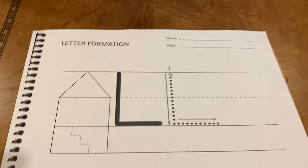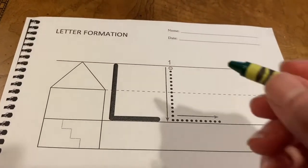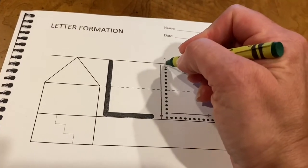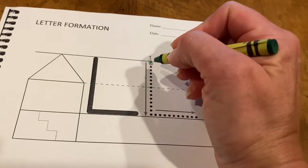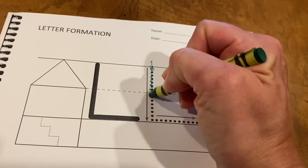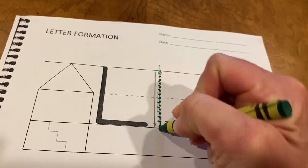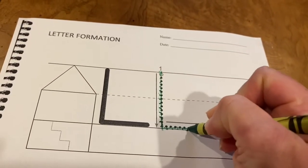Then you're going to take your green crayon and you're going to try the uppercase L. Start at the top line where that starting dot is. Bring your green crayon all the way down to the bottom and then across.